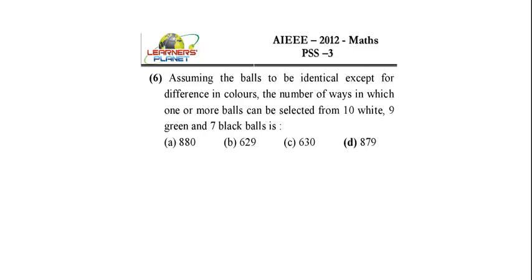Assuming the balls to be identical except for the difference in colors, the number of ways in which one or more balls can be selected from 10 white, 9 green and 7 black balls is. Let's make the scenario on the whiteboard and see how to solve this type of question.